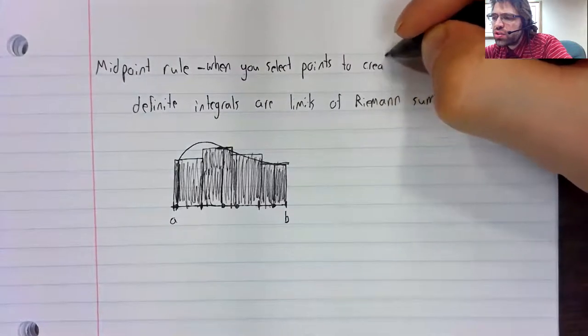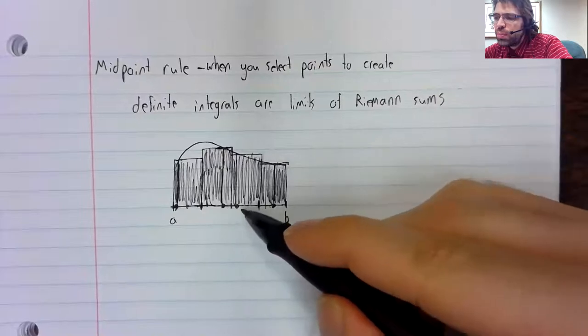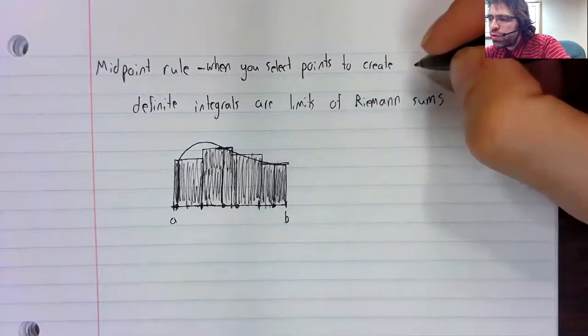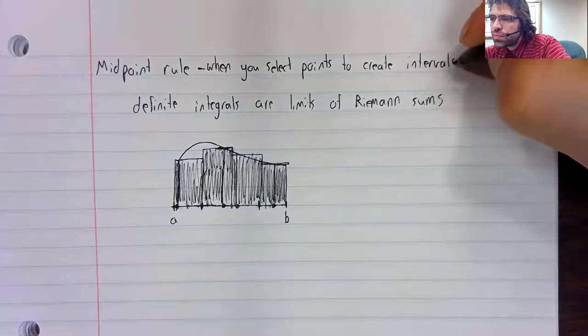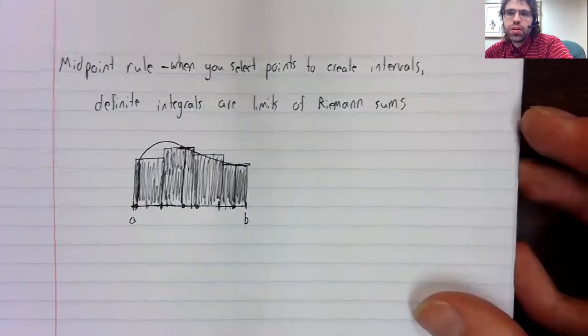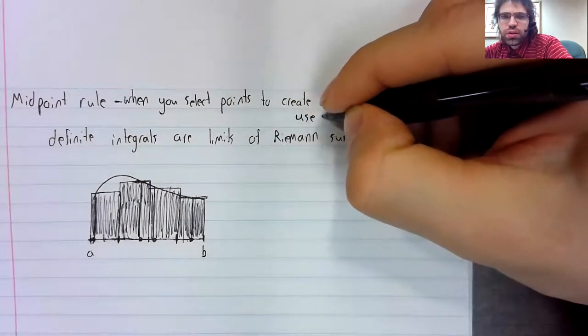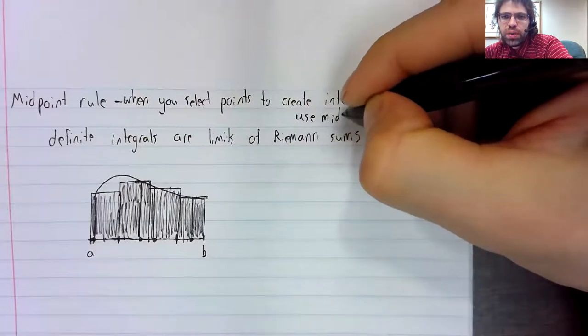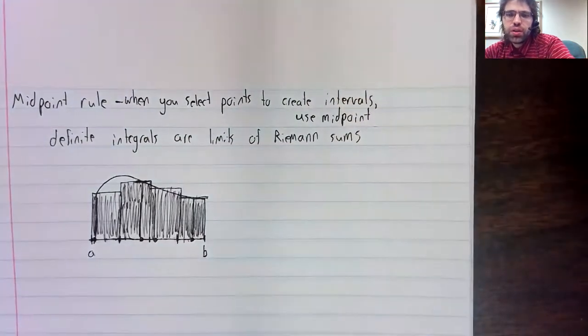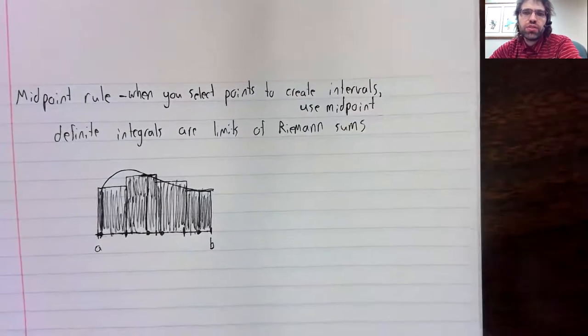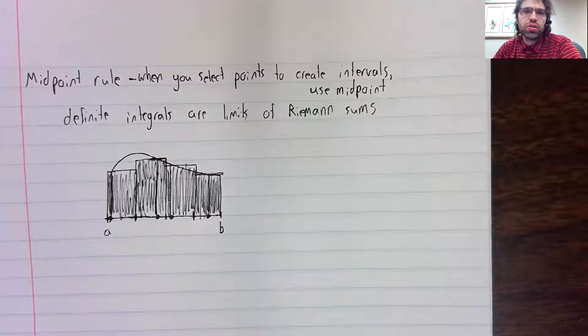All the midpoint rule says is that when you select points to create these subintervals, you should use the midpoint in order to make your approximation as good as possible.